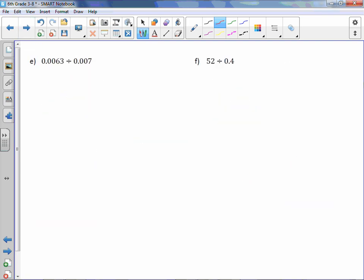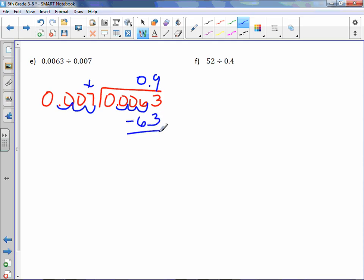Letter E, 0.007 into 0.0063. I have to move it 3 times now, so move the decimal 3 times inside and put the decimal point above. So all the zeros before really don't mean anything. We're looking at just 7. 7 into 6 is 0 times, into 63 exactly 9 times, minus 63 is 0. That was a nice easy one. It looked more complicated than it was. 0.9.